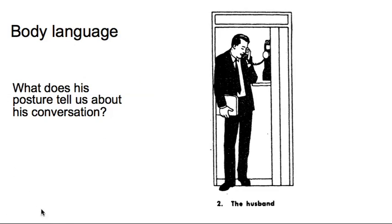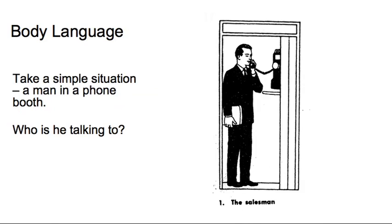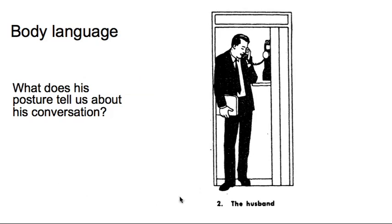But compare that with this one here. This is the husband. Why is this the husband as opposed to the salesman? His pose is more relaxed. He's leaning against the wall, more at ease with himself. His weight has shifted onto one leg. He's less alert.